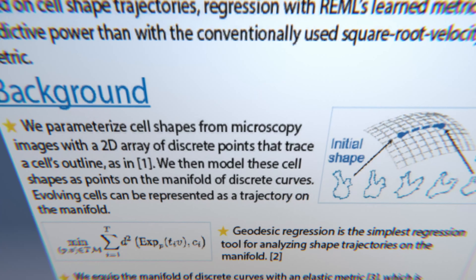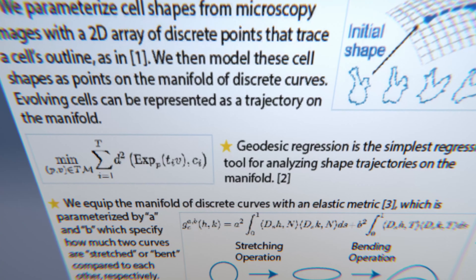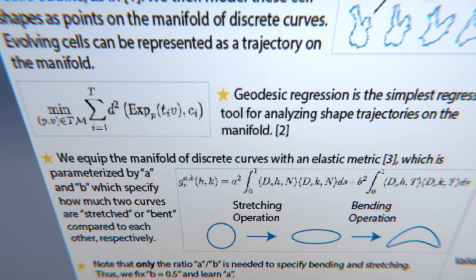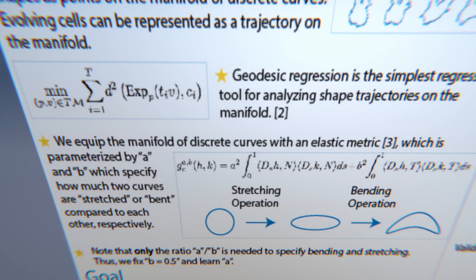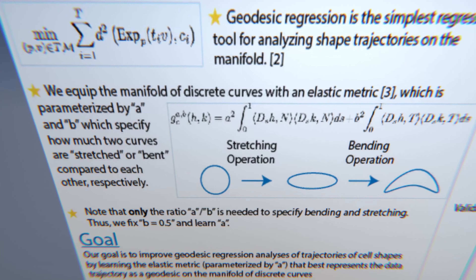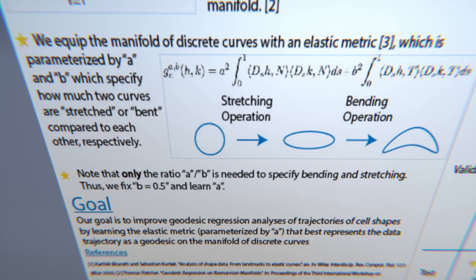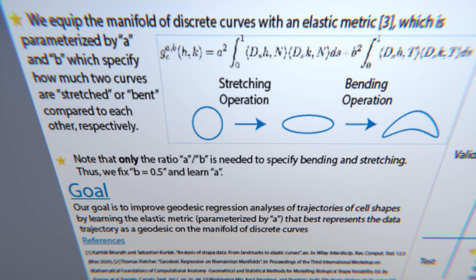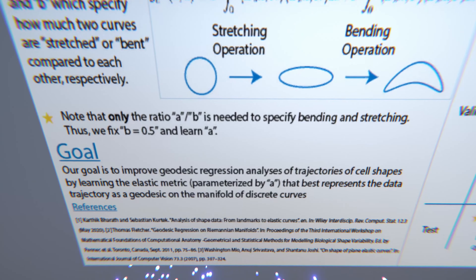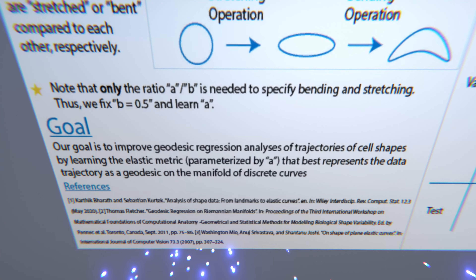Now we're on a Riemannian manifold. To define any sort of distance on this Riemannian manifold, we have to define a Riemannian metric. Specifically, we define the elastic metric, or a family of elastic metrics.